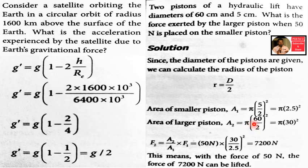For the large piston with diameter 60 cm, the radius is 60 by 2, which is 30 cm. So A2 equals pi into 30 squared. The force formula is F2 equals A2 by A1 into F1, since F2/F1 equals A2/A1.